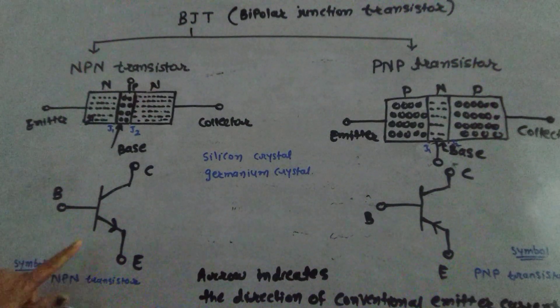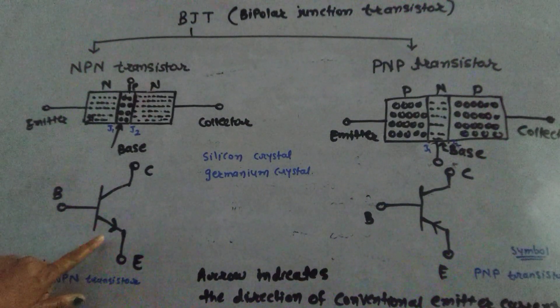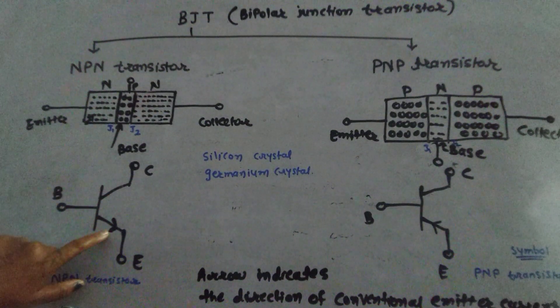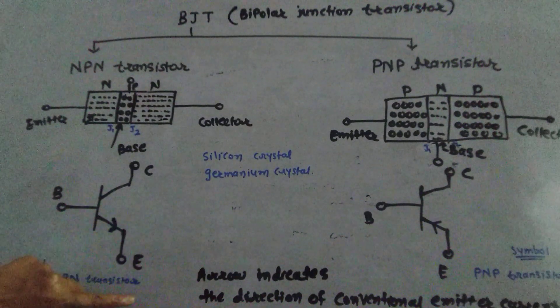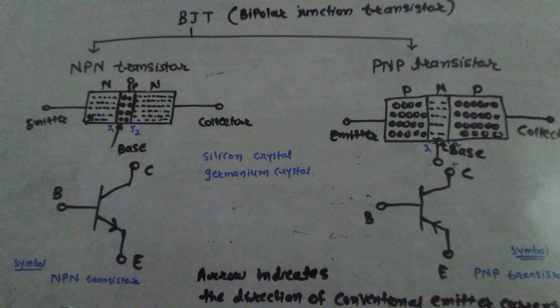Symbolically, NPN transistor shows like this, where the arrow is outside. This shows the conventional current, the emitter current, the direction of conventional current of emitter current.